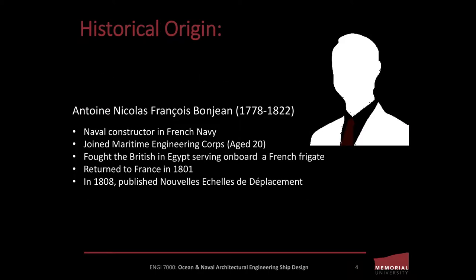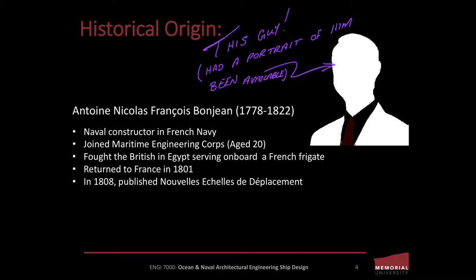Let's begin the discussion today by taking a quick detour down one of the forgotten lanes of naval architectural history. In 1778, Antoine Nicolas François Bonjean is born in Paris, and after intensive study of engineering, he joins the French Corps of Maritime Engineering at age 20.